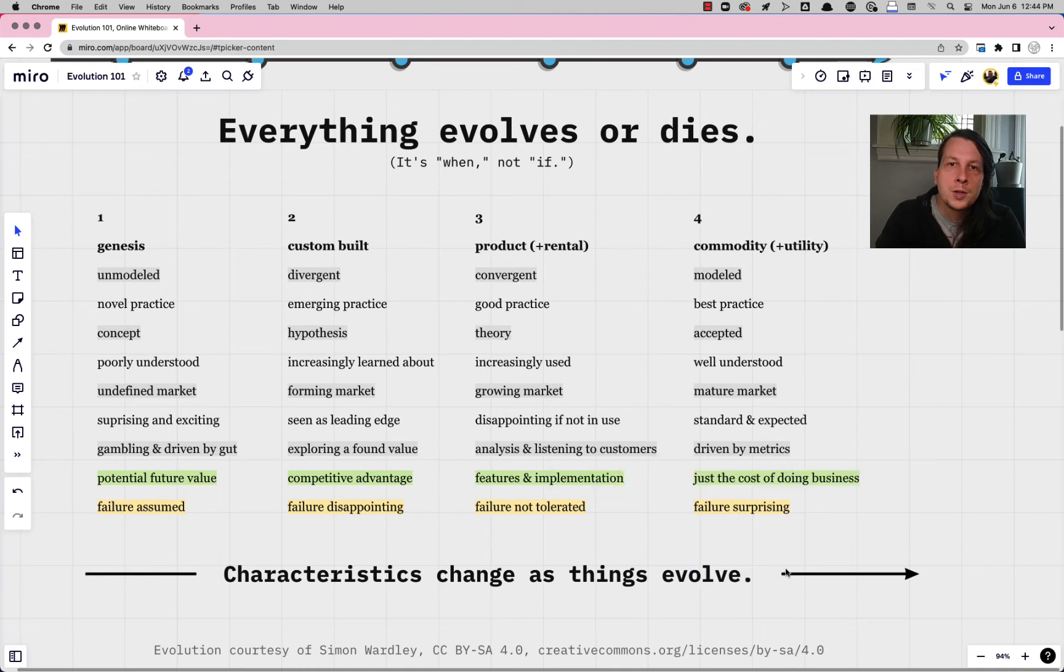That's the whole point is provoking this discussion where we get our assumptions out onto the table. So once you kind of get comfortable with one characteristic and using that to decide how evolved something is, you can start to use multiple characteristics.